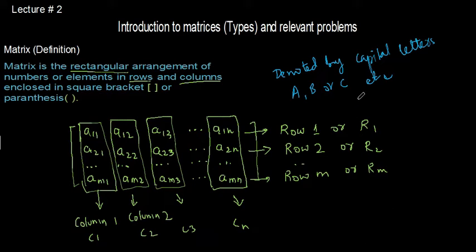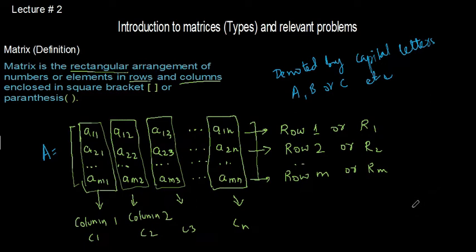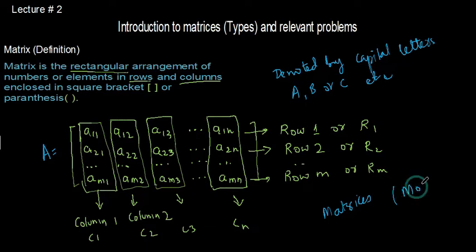The elements are noted by corresponding lowercase letters. If the matrix is A, then its elements are indicated by aij, where A11 indicates the element in the first row and first column. Elements can be numbers or sometimes functions. Note that the word 'matrices' means more than one matrix.